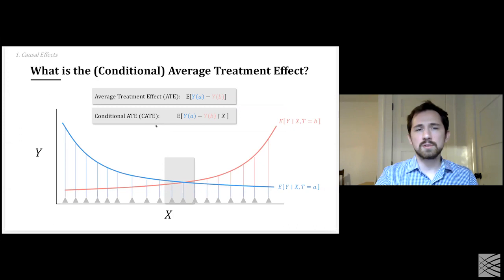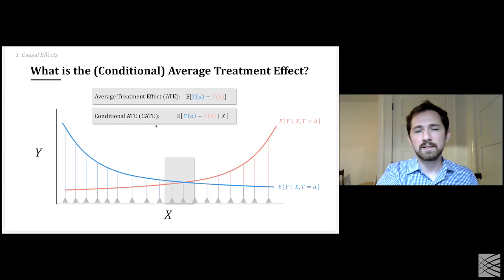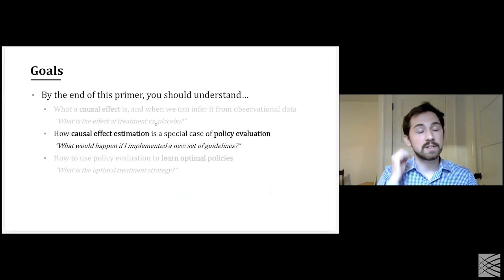An average treatment effect is the difference between these two conditional expectation lines, averaged over the distribution of X. You can also talk about heterogeneous treatment effects — conditional average treatment effects — where there's some subset of X that I'm conditioning on. For instance, at one point the conditional average treatment effect might be around zero, whereas at another it would be in favor of treatment B. That's a quick tour through causal effects, nomenclature, notation, and assumptions.